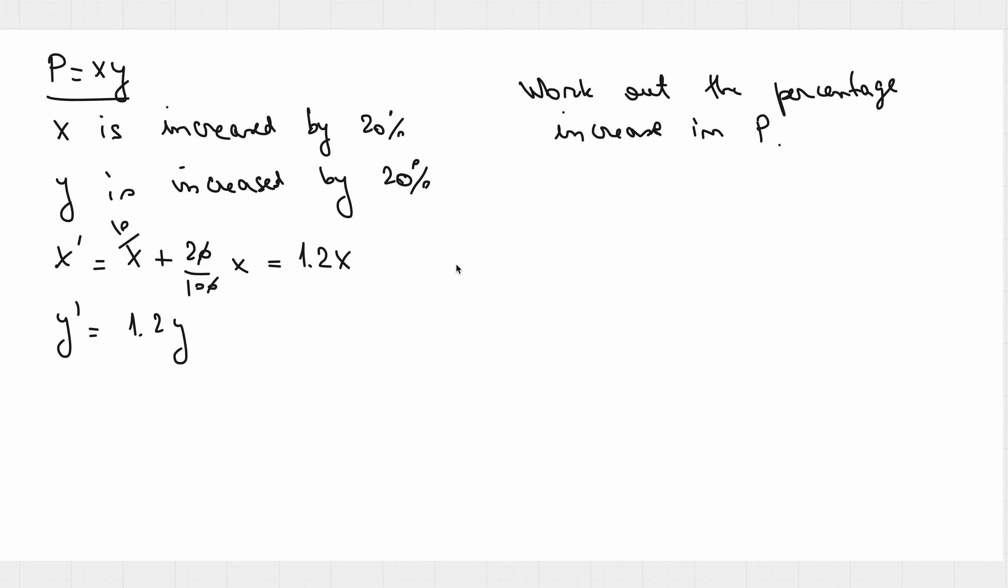Okay, so starting from here, our new p, the increased one, will be x prime times y prime, which is 1.2x times 1.2y, and this will give us 1.44x times y, but x times y is p.